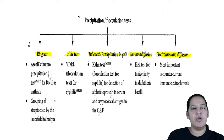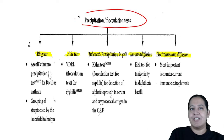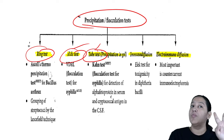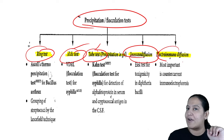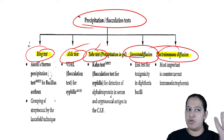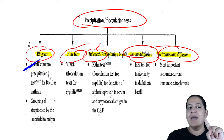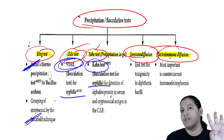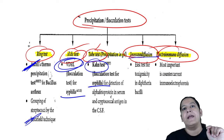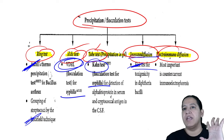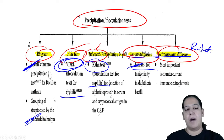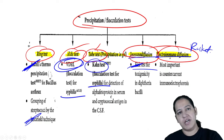Quick revision of precipitation types: ring test — Ascoli's for Bacillus anthracis, Lancefield for Streptococcus. Slide and tube — both for syphilis: VDRL (slide) and Kahn (tube). Immunodiffusion — Elek's gel precipitation test for diphtheria. Electro-immunodiffusion — rocket electrophoresis, no example. Now moving to complement fixation test.